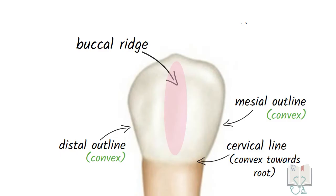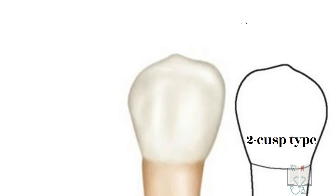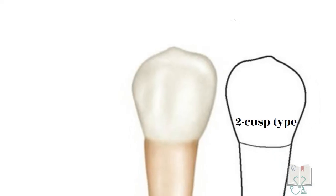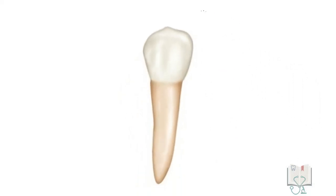The two-cusp type mandibular second premolar from the buccal aspect appears exactly the same as the three-cusp type. Coming to the root, a single root is seen which is smooth and conical.